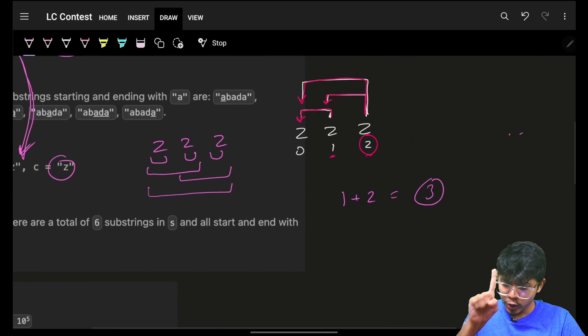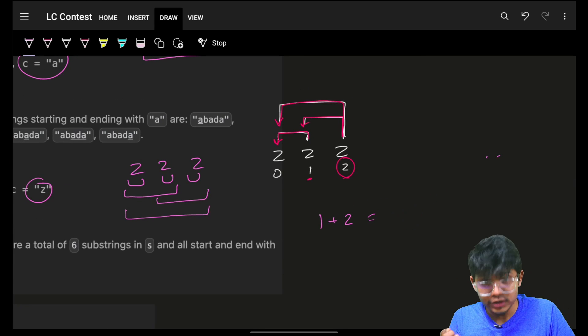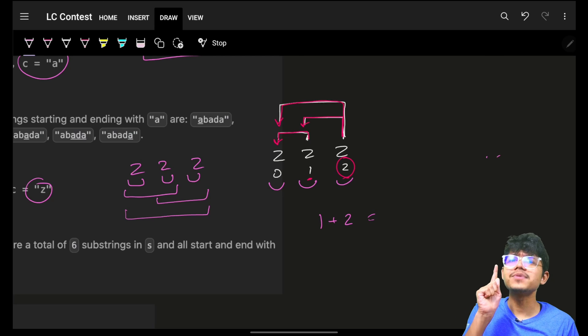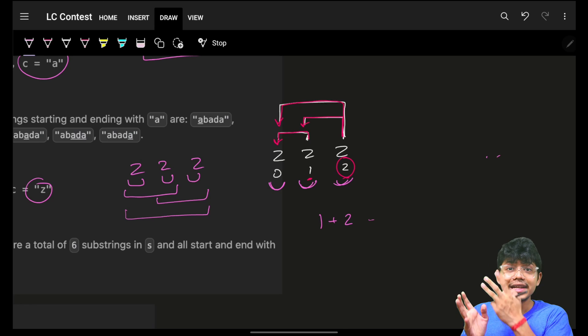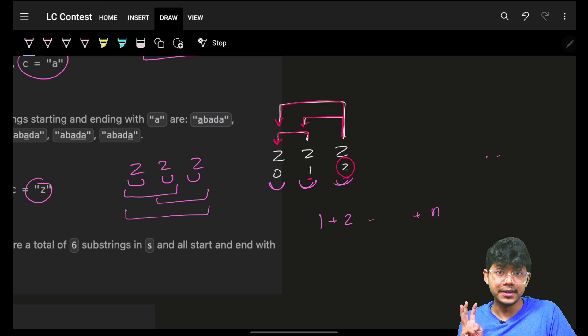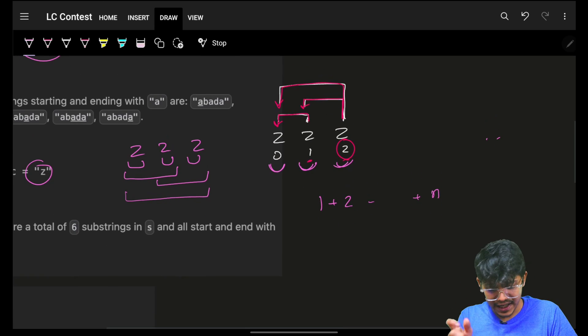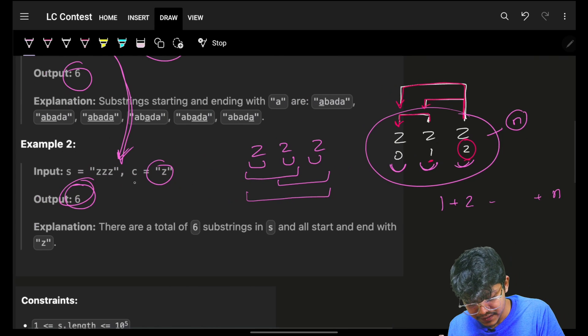We took everything, we just missed single ones. Because we can also have individuals, individual one length substring also we can have. So simply, how many one length substrings we can have? If I have three z characters, I can have three one length substrings of z. So at last, add a plus n. So so far we realized that if I have n characters of this character z, n characters of this character z, then my total number of substrings will be nothing but one plus two plus plus up till n.